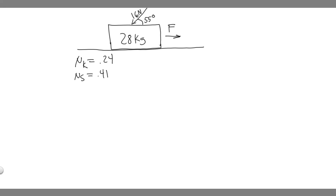In this problem, we're told: what is the minimum horizontal force F needed to make the box start moving in this figure? The coefficients of kinetic and static friction between the box and the floor are 0.24 and 0.41 respectively. So as usual, you want to draw what's going on. They already give us a figure, and we know we have a box with 28 kilograms — that's going to be its mass. We have a force above which is 16 newtons at 55 degrees to the horizontal, and we have this force F which is what we're solving for.